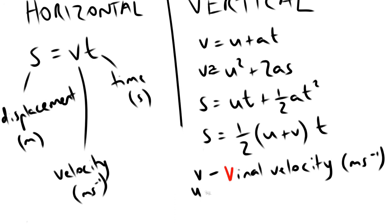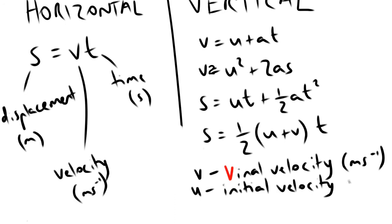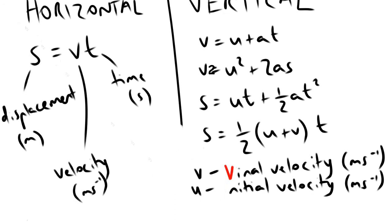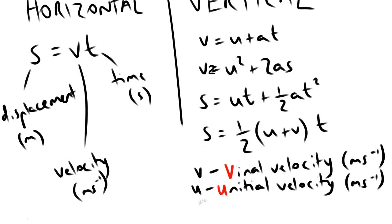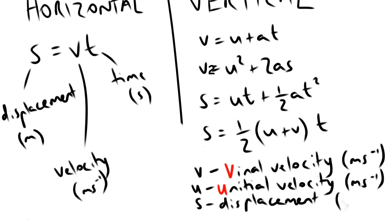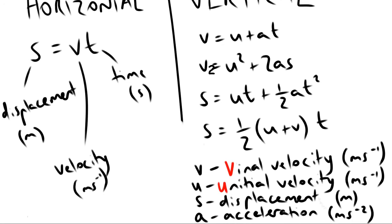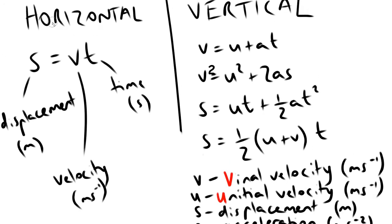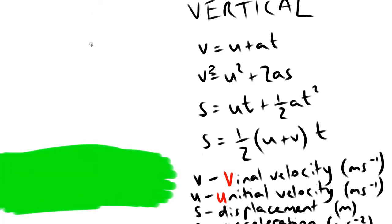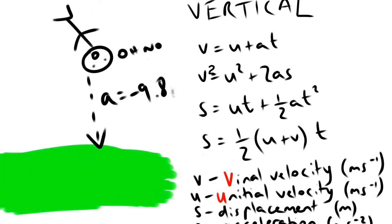V is final velocity in meters per second, U is initial velocity in meters per second, T is time taken in seconds, S is displacement in meters, and A is acceleration in meters per second squared. Take acceleration as negative 9.8 meters per second squared, because that is gravity, and gravity acts down.